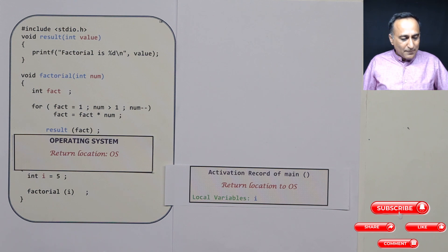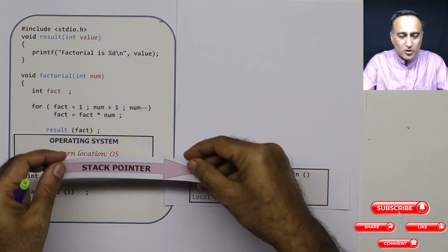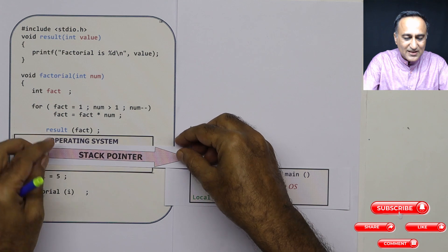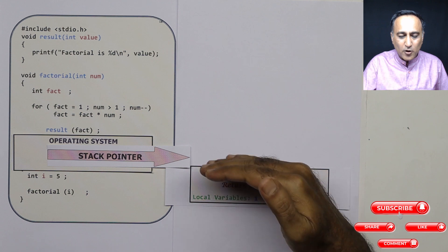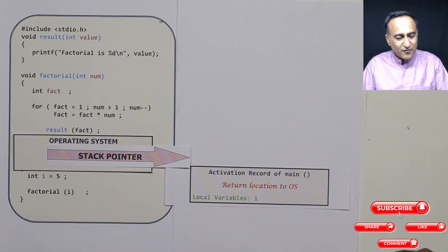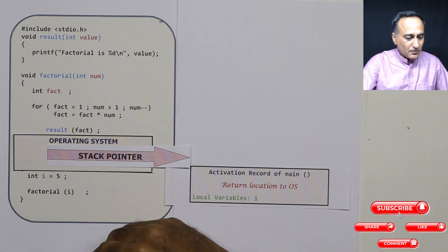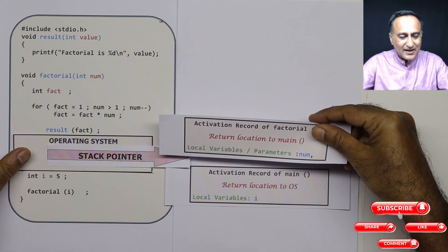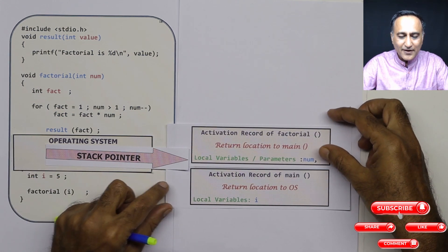To keep track of the next empty slot in the stack box, we have something called the stack pointer. The stack pointer tells us that right now we only have main, and above main, at the next address, the next record can be inserted. Since main is calling factorial, after factorial is called, the next item in the stack is the activation record of factorial. The stack pointer moves up, indicating the next item can be inserted after factorial.